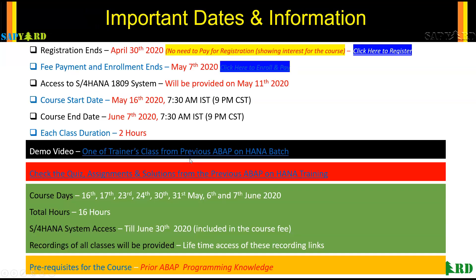These are the important dates and times for this training. Registration ends on April 30th, and payment of fees and enrollment ends on May 7th. Participants will receive their student ID and S/4 HANA 1809 server access by May 11th, and the first day of training is on 16th May 2020.